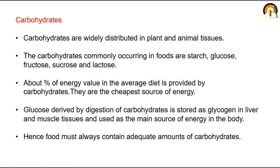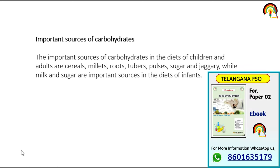Carbohydrates are widely distributed in plant and animal tissue. Carbohydrates commonly occurring in food are starch, glucose, fructose, sucrose, and lactose. Energy value in an average diet is provided by carbohydrates, making it the cheapest source of energy. Glucose derived by digestion of carbohydrate is stored as glycogen — in the liver and muscle tissue in animals — and used as the main source of energy. Hence, food must always contain an adequate amount of carbohydrate. Sources of carbohydrate include cereals, fruit, tubers, pulses, sugar, jaggery, and milk.